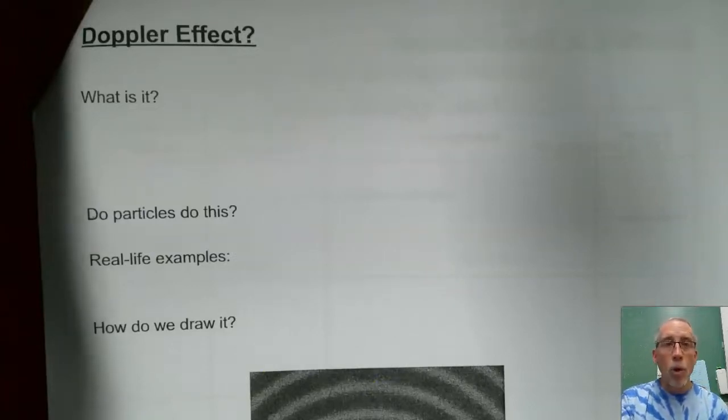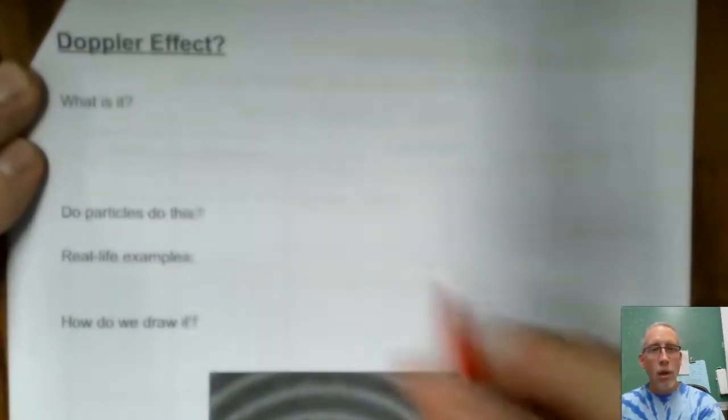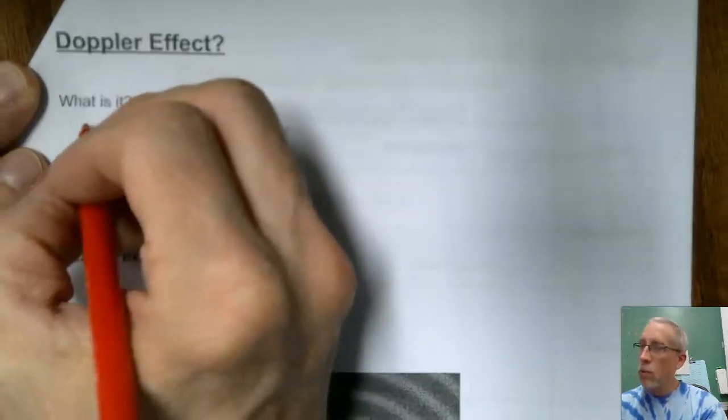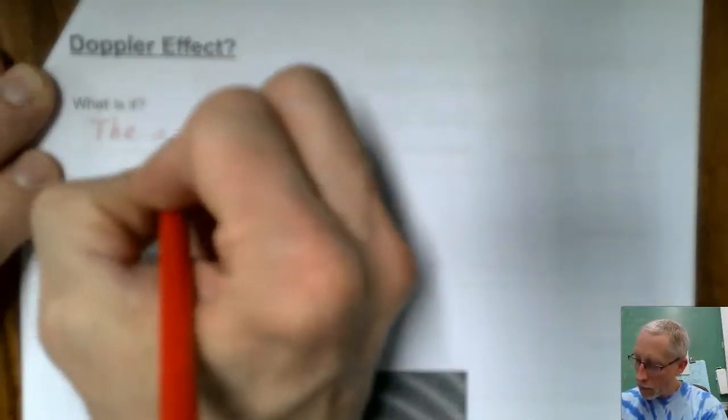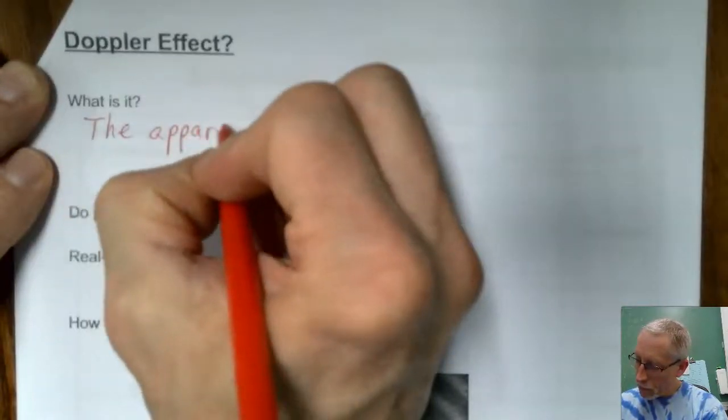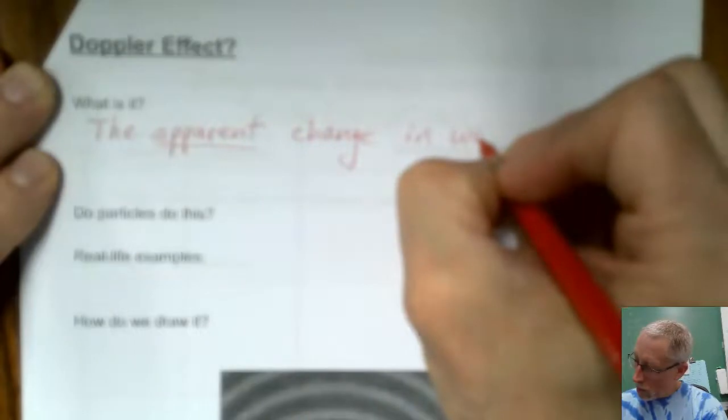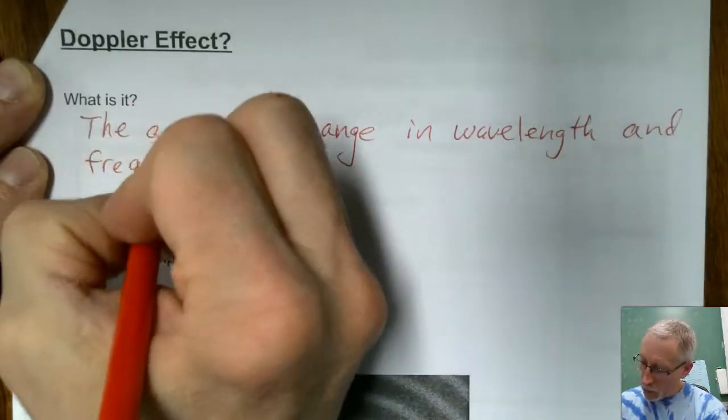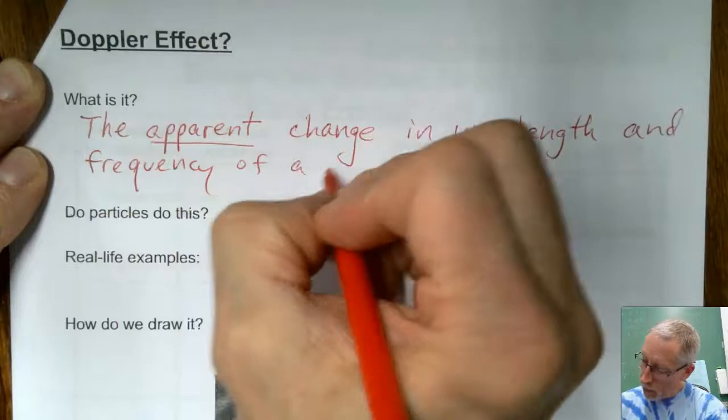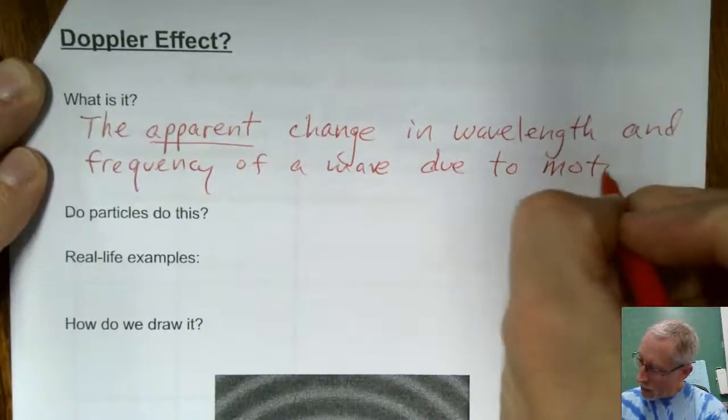Let's write down what we experienced there. Make sure you can see what I'm writing. Make sure you're not muted because I do talk as we write here. And don't fast forward. So I'll describe the Doppler effect as the apparent change in wavelength and frequency of a wave due to motion.